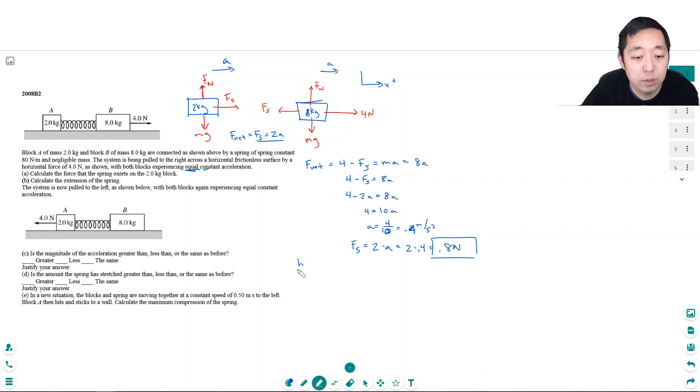Calculate the extension of the spring. Well, now that I know the spring force, it's equal to k delta x, the extension. So the delta x is how much it's, is Fs over k. The spring force is .8 newtons. And the spring constant is 80 newtons per meter. And so that's .01 meters, I believe. Yep, .01, 1 over 100 meters. Or that's 1 centimeter. There's another way to write it.